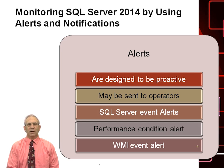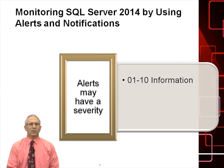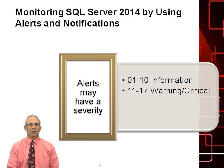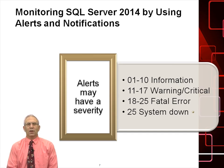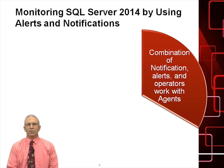That alert can also call a corrective action. Alert severity values range from 0 and 1 through 25. Levels 1 through 10 are informational, 11 through 17 are warnings, and anything from 18 and above is critical. We want to avoid errors 18 to 25 — level 25 means the system is down. In a perfect world, we receive and address errors at levels 1 through 17, so we can avoid 18 through 25.